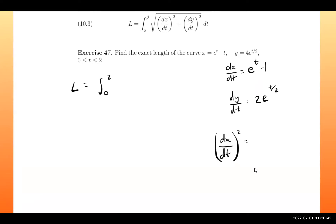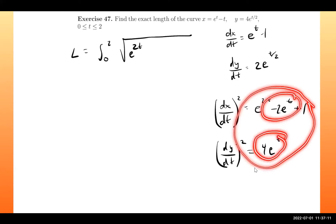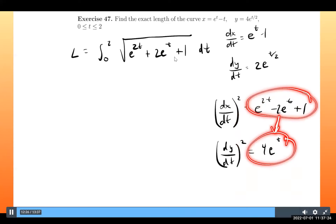We square each derivative before plugging into the formula. (dx/dt)² expands to e^(2t) − 2e^t + 1, and (dy/dt)² equals 4e^t. Adding these together and combining like terms in the middle gives e^(2t) + 2e^t + 1.